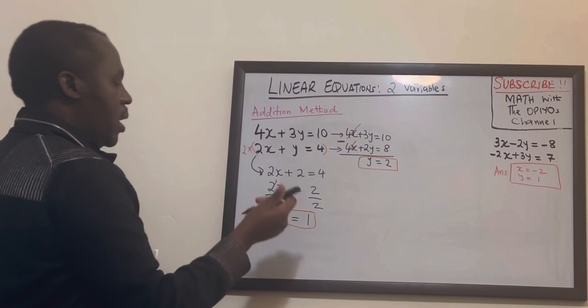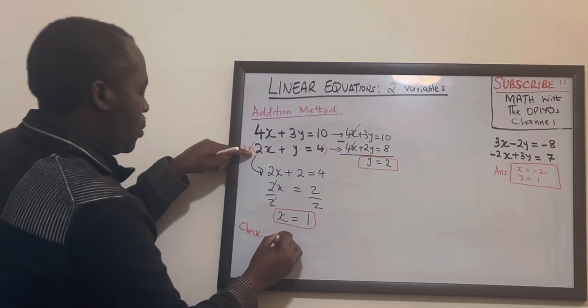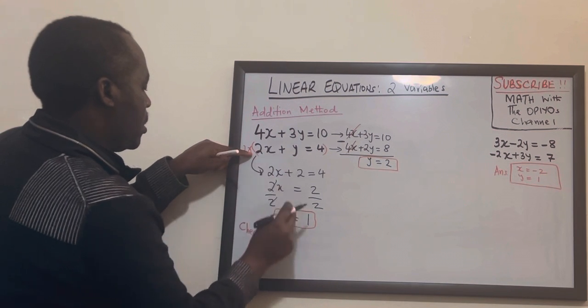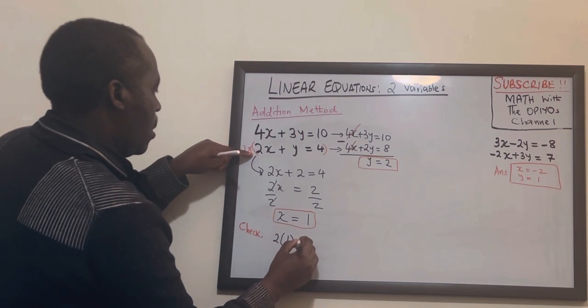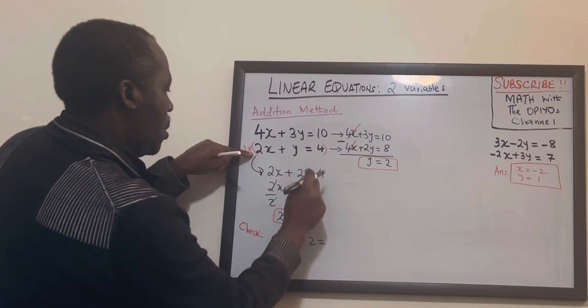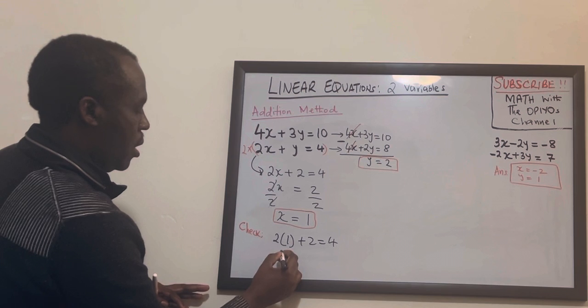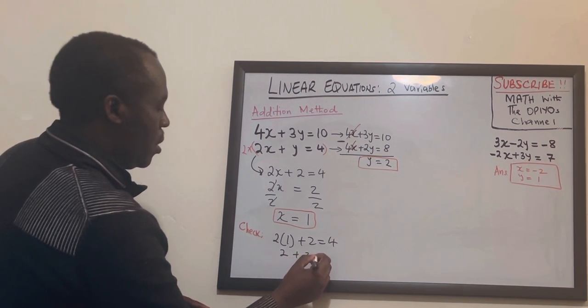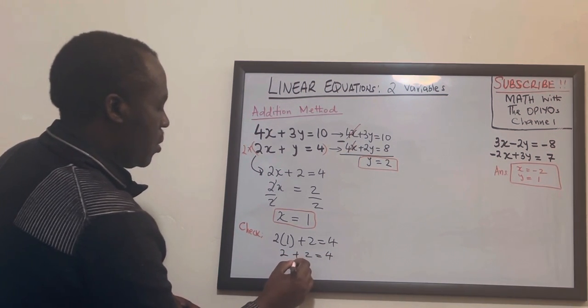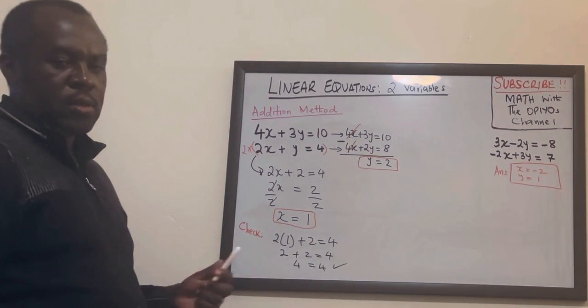So let's try this equation again. So where there's x we'll put 1. So this will be 2 times 1 plus y is 2 equals 4. So here we get 2 plus 2 equals 4. So 4 equals 4. Then I know my answer is correct.